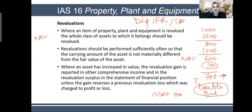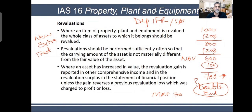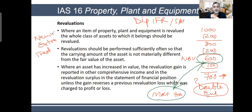For the revaluation, you need to understand three things: the new depreciation (based on the revalued amount), the extra depreciation (the difference from the previous depreciation charge), and the treatment of that extra depreciation. The revaluation gain is the difference between the book value of 600,000 and the market value of 700,000 — that 100,000 difference needs to be recognized.